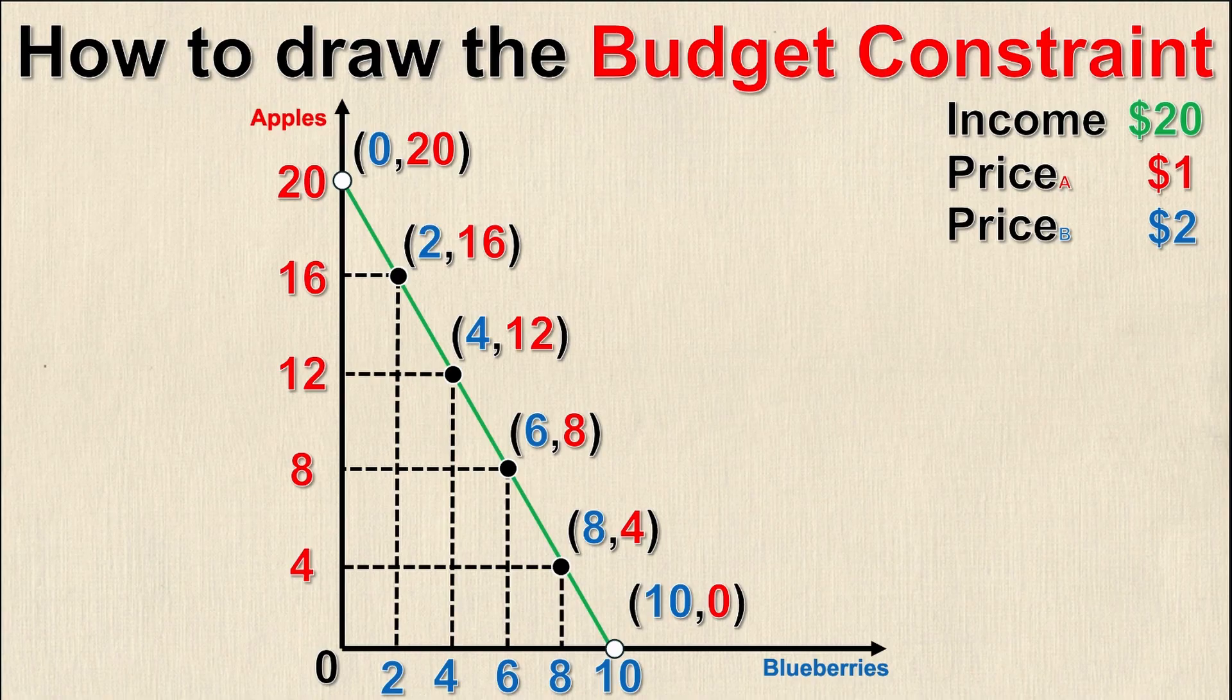There's a bunch of points in the middle depending on how divisible my two goods are. If I could divide apples or blueberries infinitely, then there's technically an infinite number of combinations I can purchase with $20. However, if I'm using $20, the amount I purchase has to be on that green line.